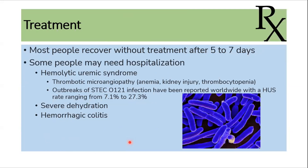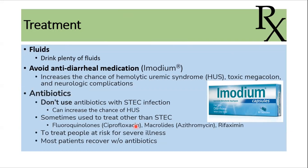Treatment is usually supportive, and most patients recover without treatment after five to seven days. Patients developing hemolytic uremic syndrome, severe dehydration, or hemorrhagic colitis may require hospitalization. IV fluids and oral fluids are the most important treatment modalities. Anti-diarrheal medications like loperamide should be avoided as they increase the risk of hemolytic uremic syndrome, toxic megacolon, and neurologic complications. Antibiotics should also be avoided in Shiga toxin-producing E. coli infection as they increase the risk of HUS; however, in some severe cases, fluoroquinolones, macrolides, or rifaximin may be used.